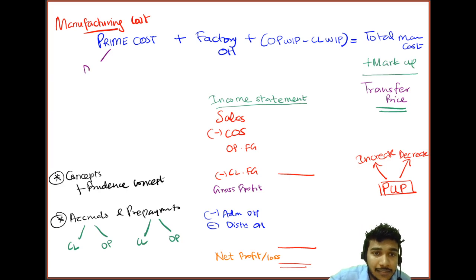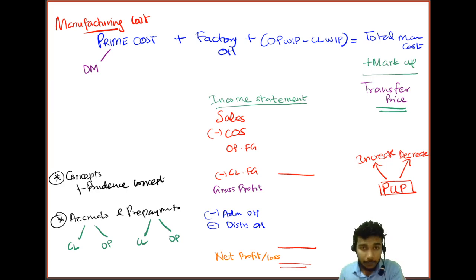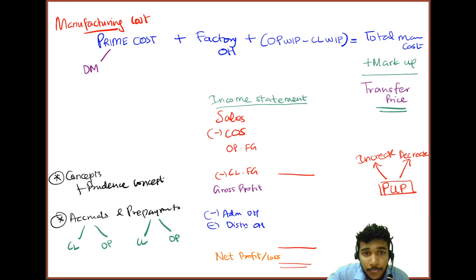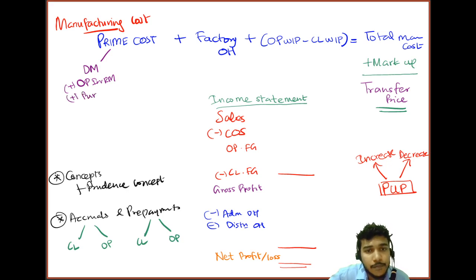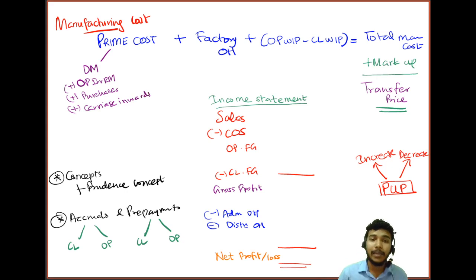Inside prime cost, the first element is direct materials. We should always ignore the raw material purchases amount alone, because whatever you buy is not necessarily what is used. Instead, we find the cost of raw materials actually consumed: take opening inventory of raw materials, add purchases, deduct any purchase returns to get net purchases, then add carriage inwards — the amount you pay for shipment so your supplier delivers goods to your doorstep.